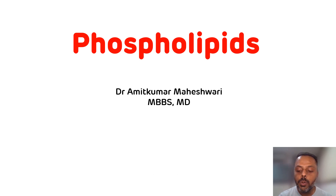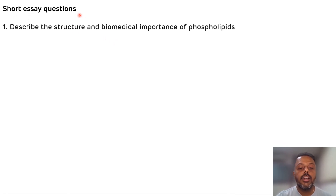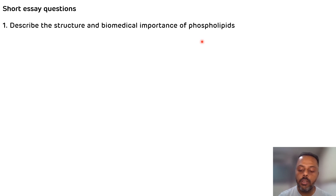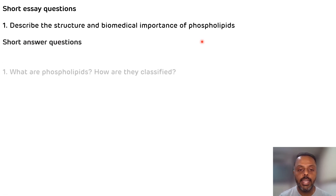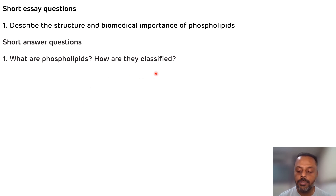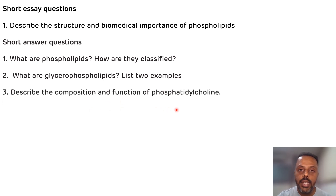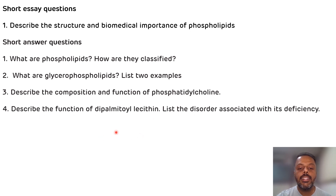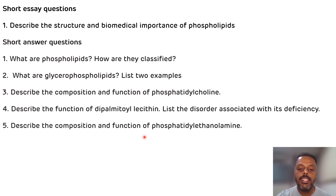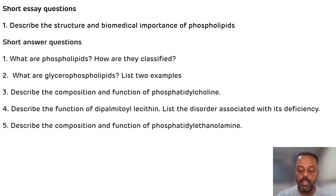Before starting the video, let's go through the questions which are asked from this particular topic in theory examinations. Thought-answer questions like: describe the structure and biomedical importance of phospholipids; what are phospholipids and how are they classified; what are glycerophospholipids, list four examples; describe the composition and functions of phosphatidylcholine; describe the function of dipalmitoyllecithin and list the disorder associated with its deficiency; describe the composition and function of phosphatidylethanolamine. We will discuss all these questions as well.